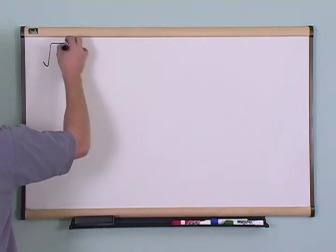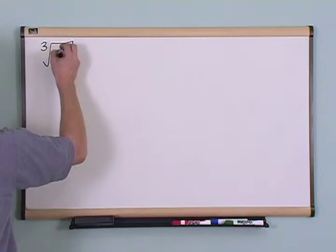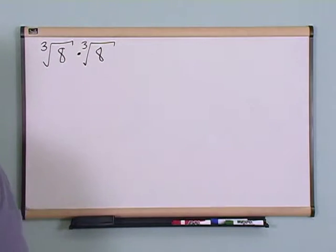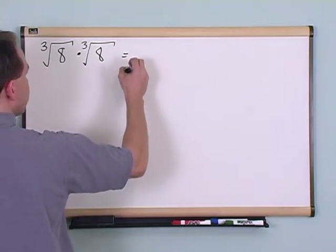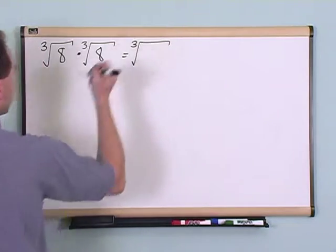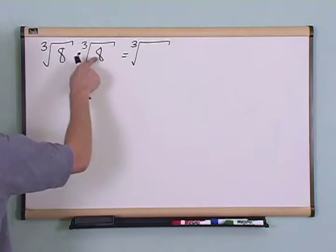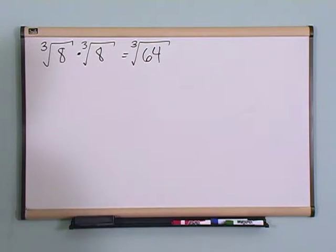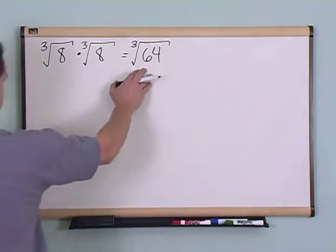What if you had the cubed root of 8 times the cubed root of 8? Well, just like I told you, you just write down a new symbol, cube root. 8 times 8 is 64, so I write that down inside the radical. And then again, I can't stop here. I need to try to simplify.